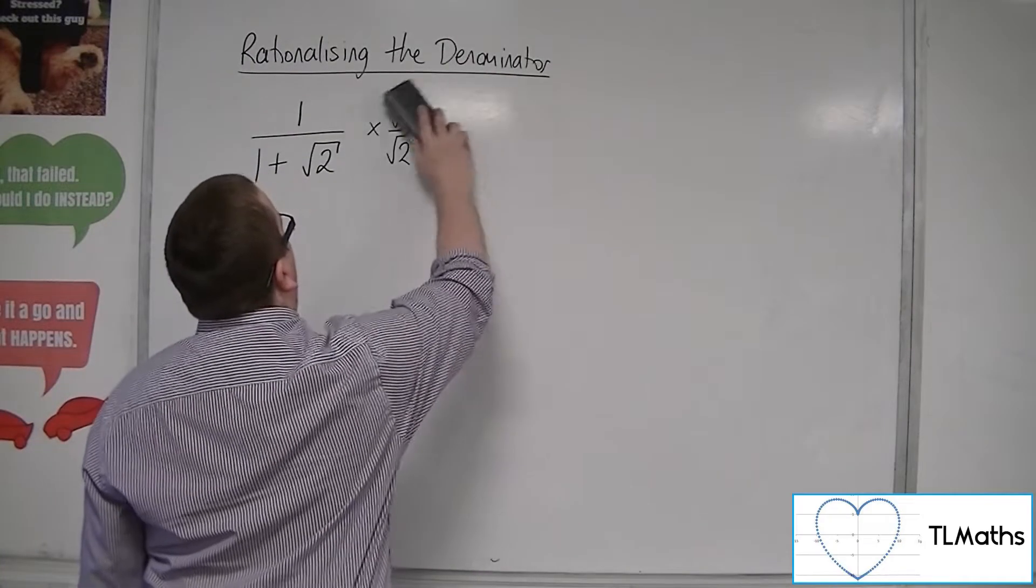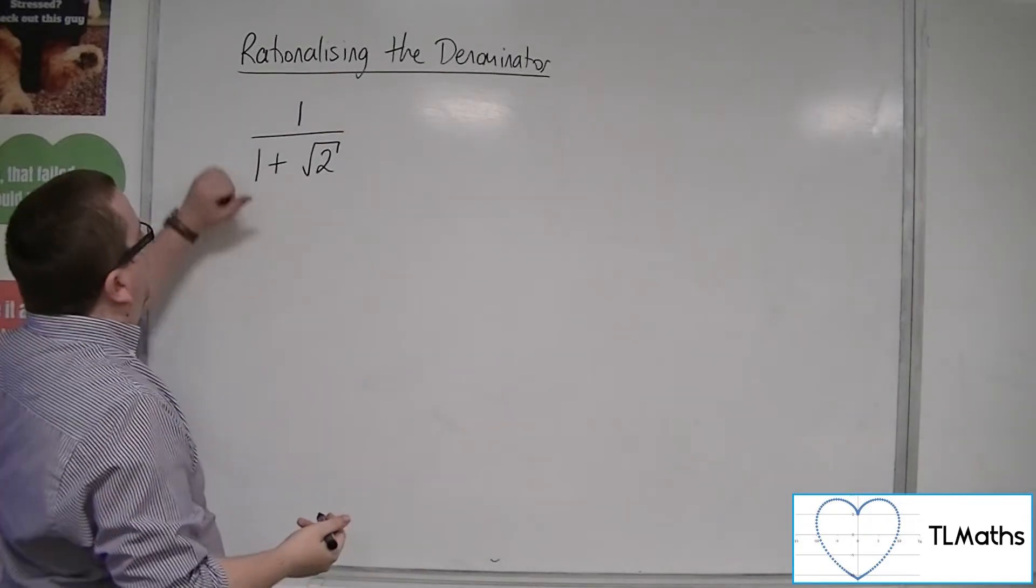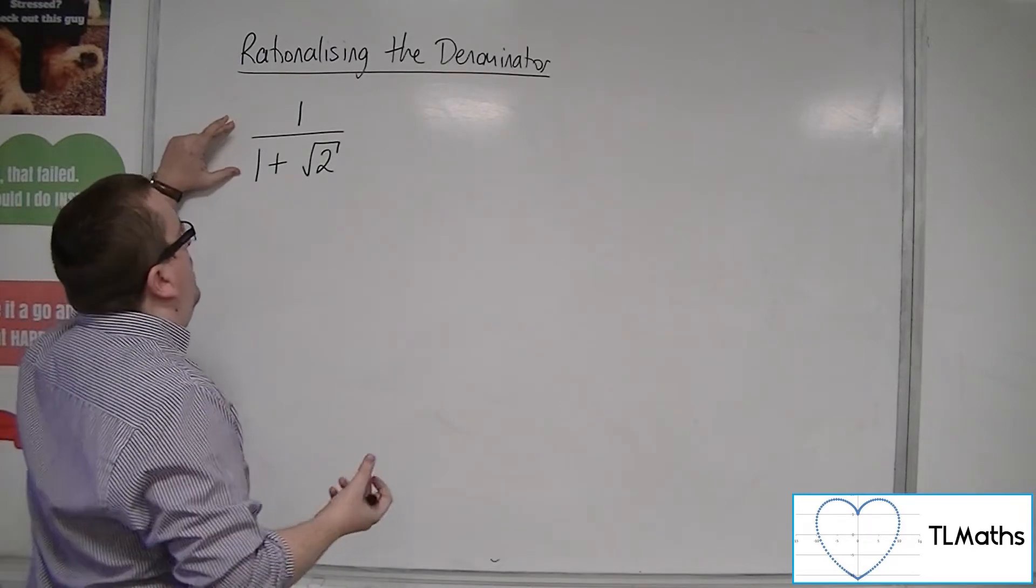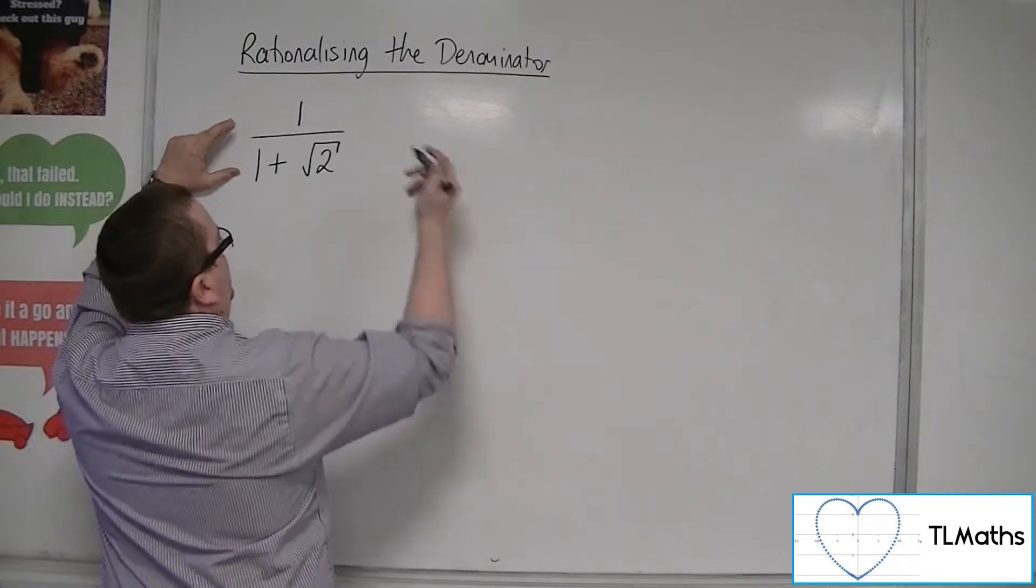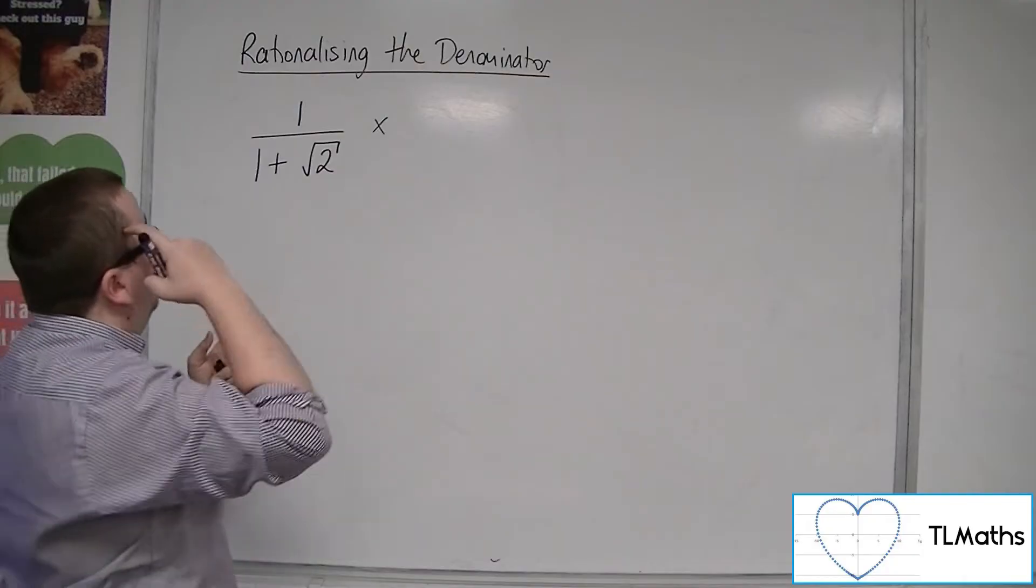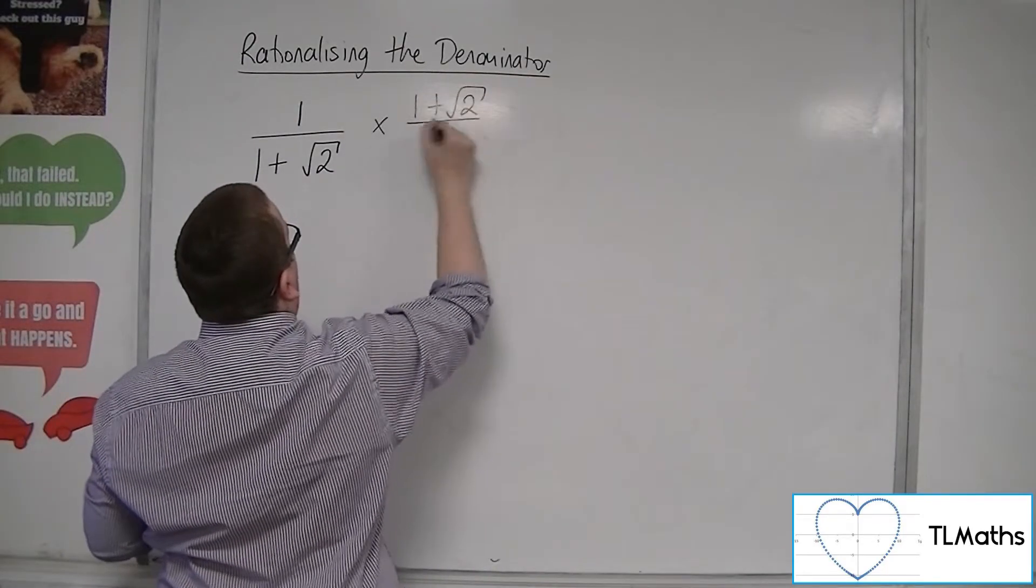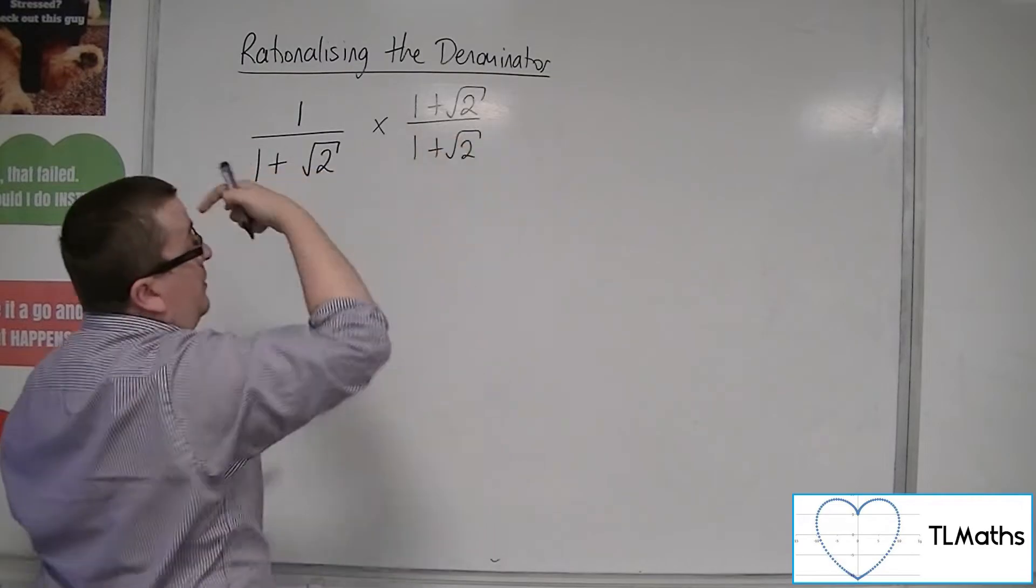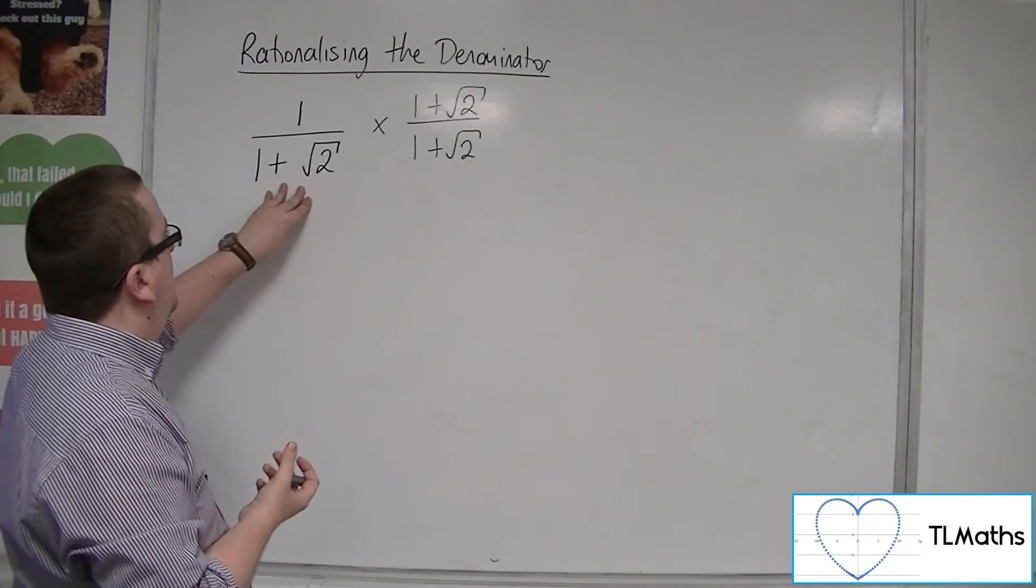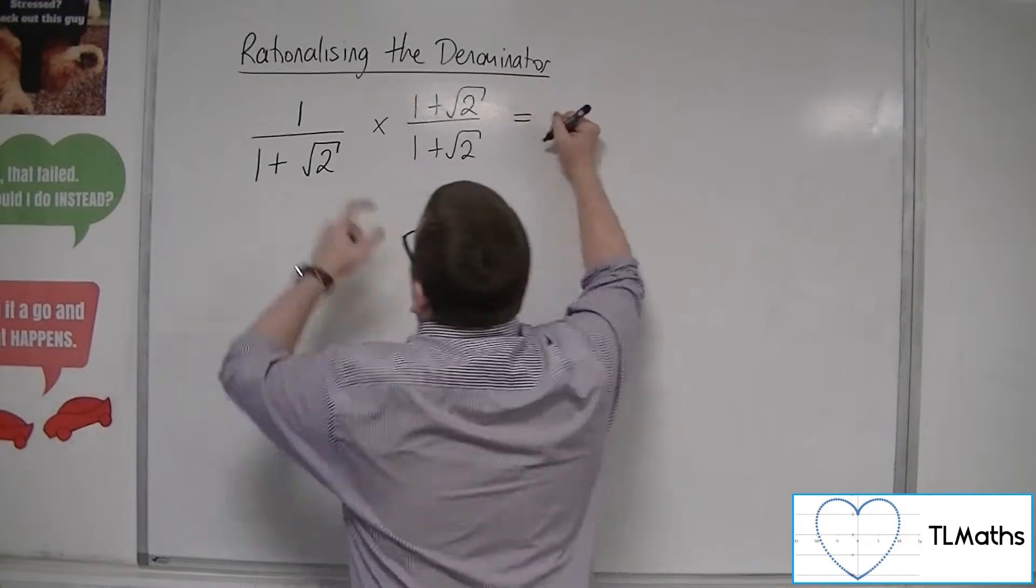So the next idea that we might try is to think about, well, if that didn't work, then how about, in the previous examples, we've been multiplying by the denominator. So maybe if we use 1 plus root 2 over 1 plus root 2, that seems like a good idea, just to copy that denominator, and hopefully we'll see a cancellation.